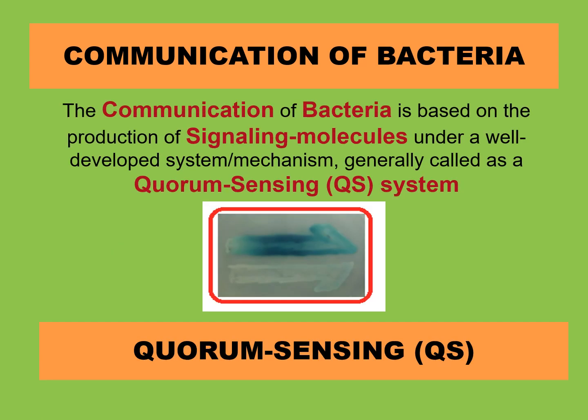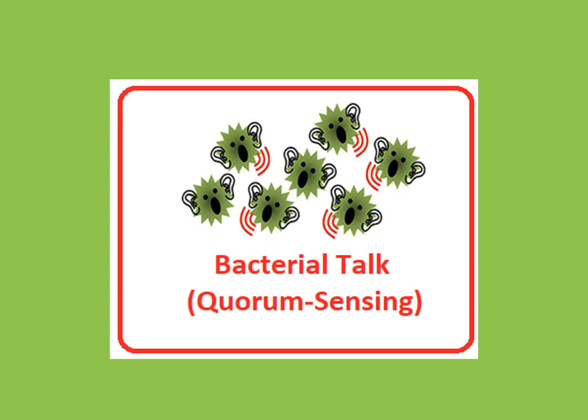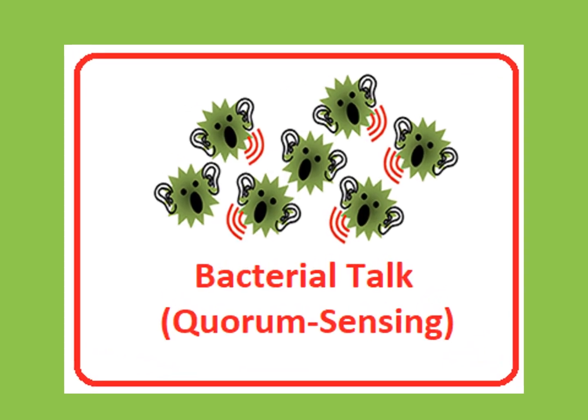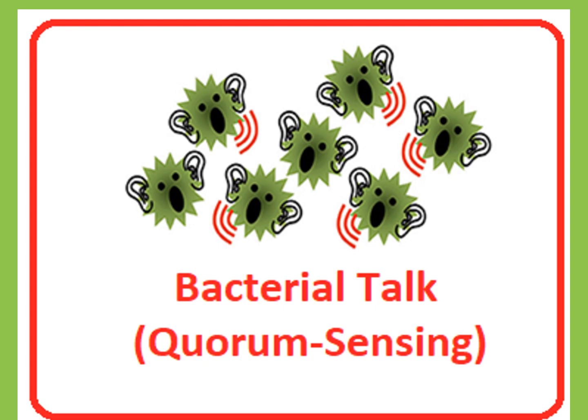The communication of bacteria is based on the production and secretion of chemical signal molecules under a well-developed system, generally called the quorum sensing system. To understand bacterial communication, you can see a figure in which bacteria come together and produce signal molecules. Through these signal molecules, they can talk, communicate, and behave like multicellular organisms.